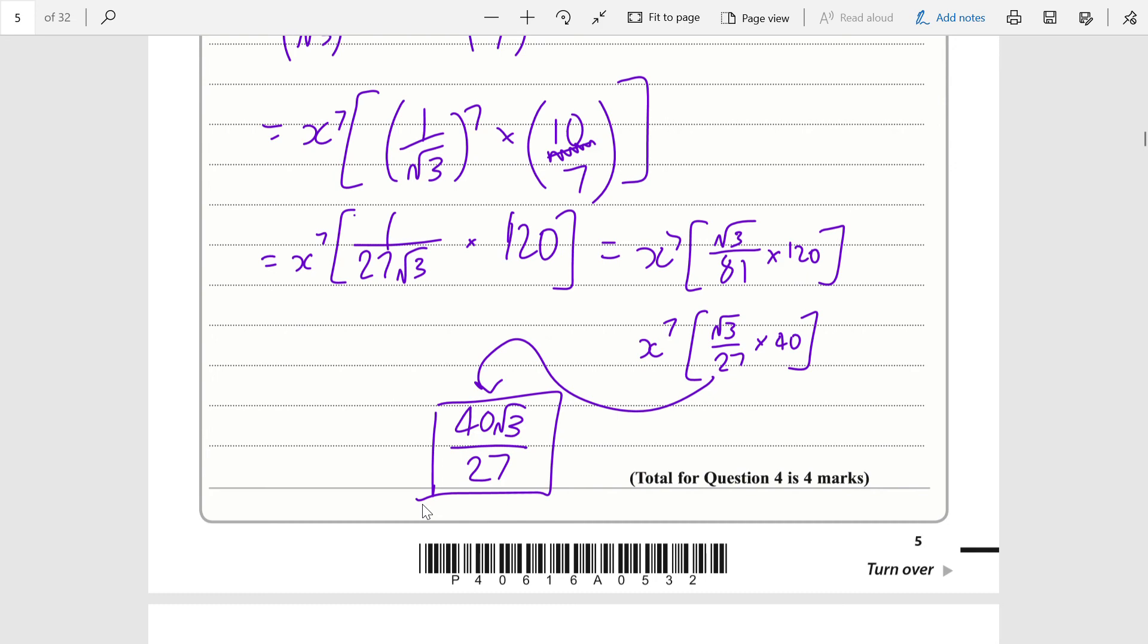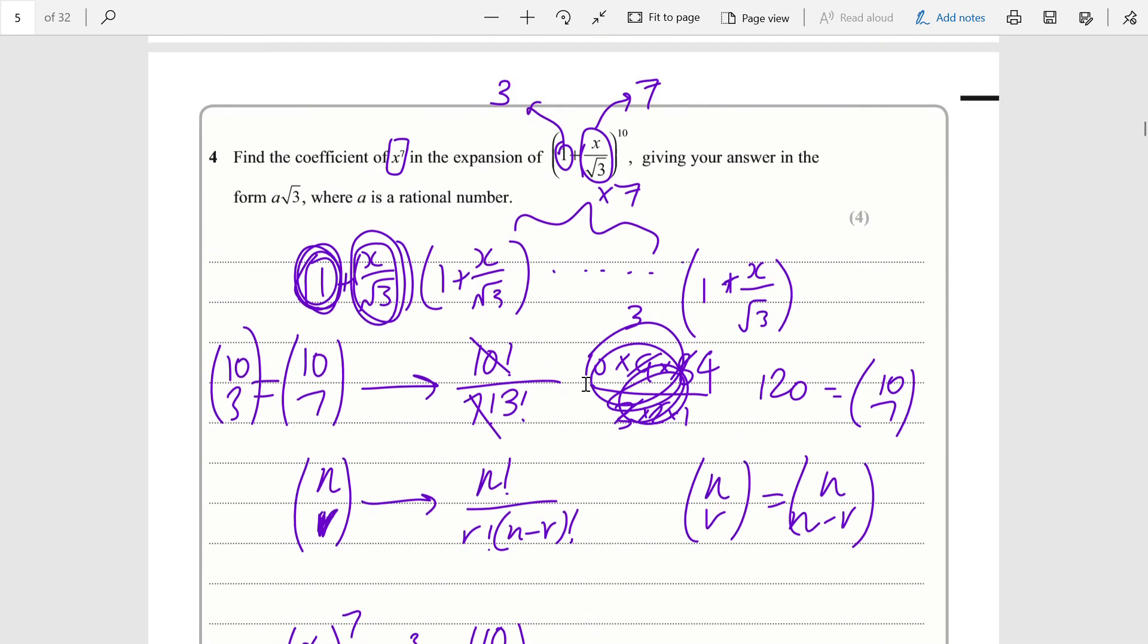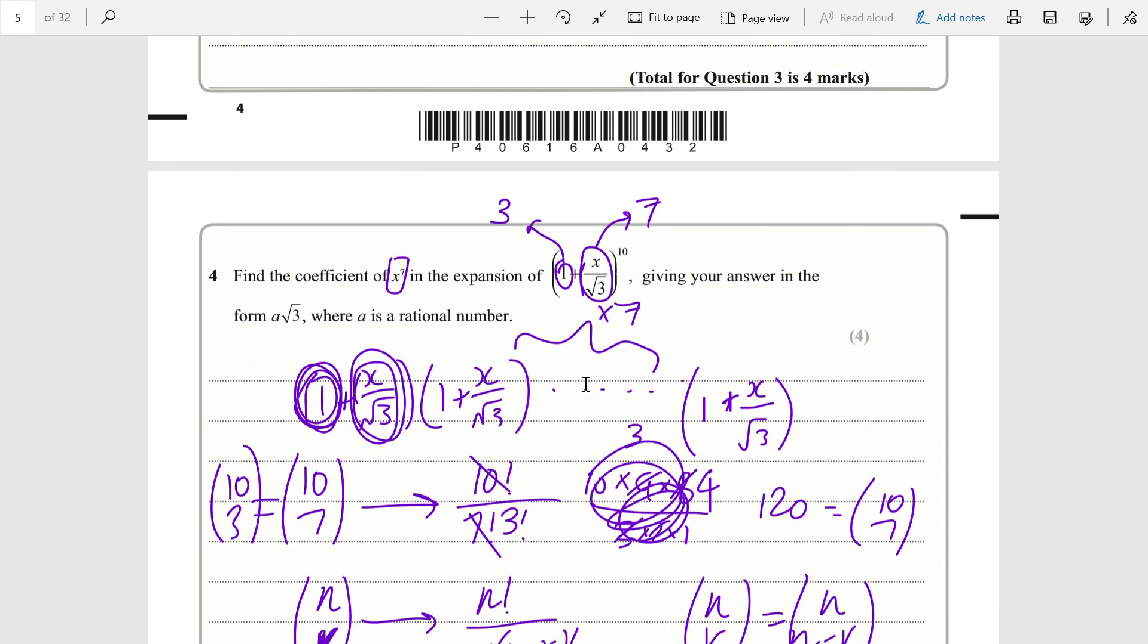I did check with the mark scheme in advance - this is the correct answer. Hopefully I've been able to explain and clarify what the binomial expansion represents and why we have the entries. Thanks for watching.